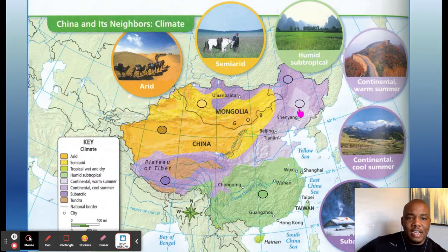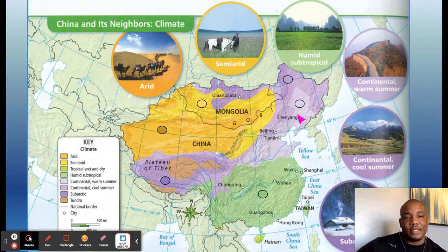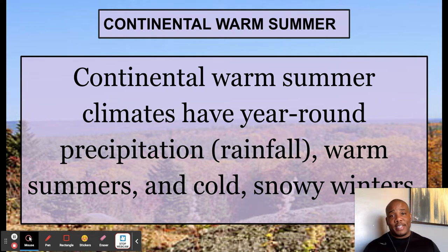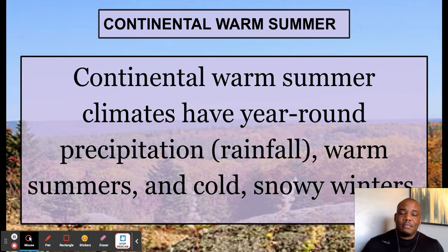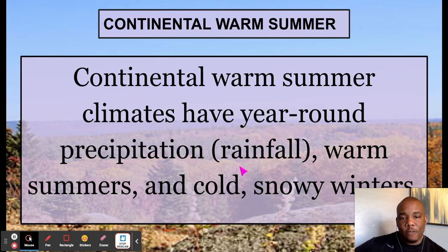The next climate is light purple: continental warm summer. Beijing, the capital of China, has a continental warm summer climate, and a lot of people live around that area — very, very highly populated. Continental warm summer climates have year-round precipitation, warm summers, and cold snowy winters. More rain generally means you can grow things and temperatures are manageable. So year-round rainfall, warm summers, cold snowy winters — lots of precipitation all the time.